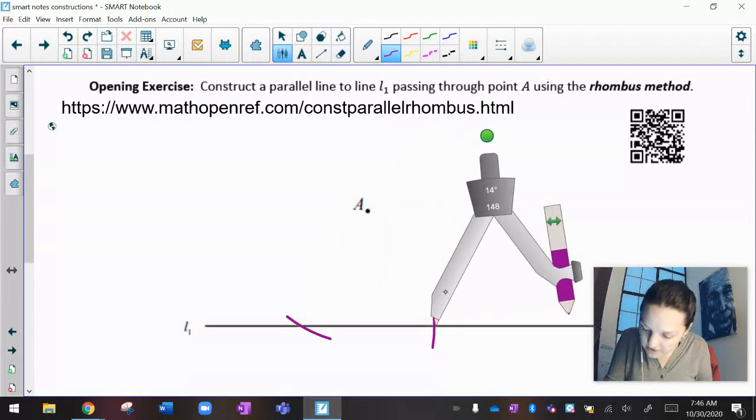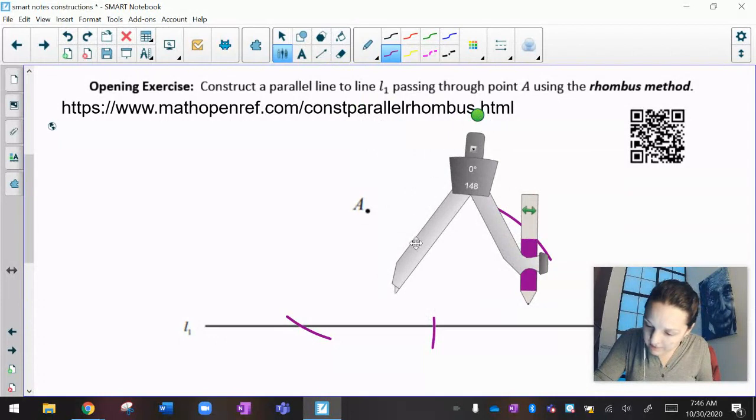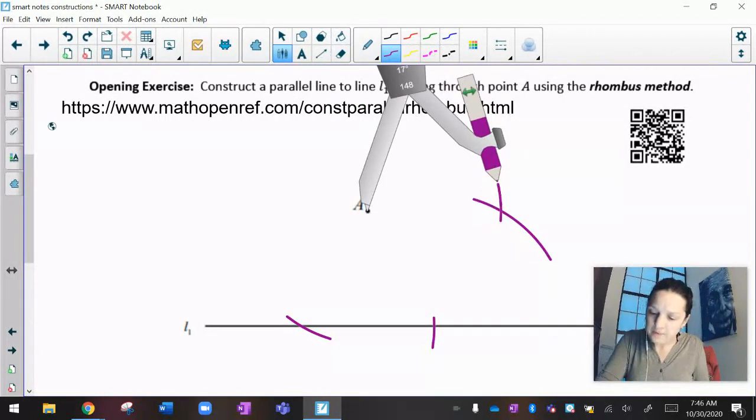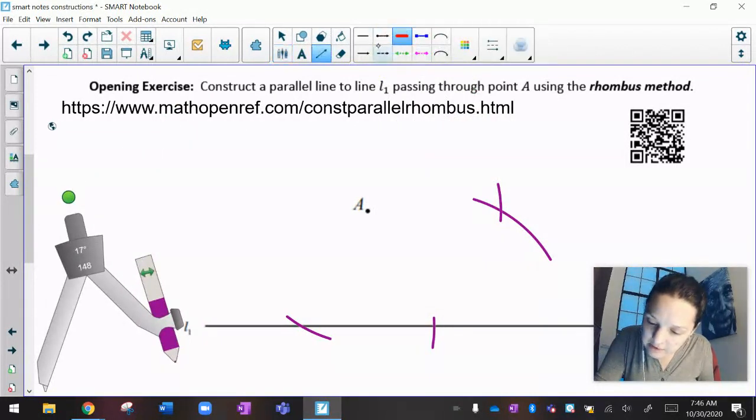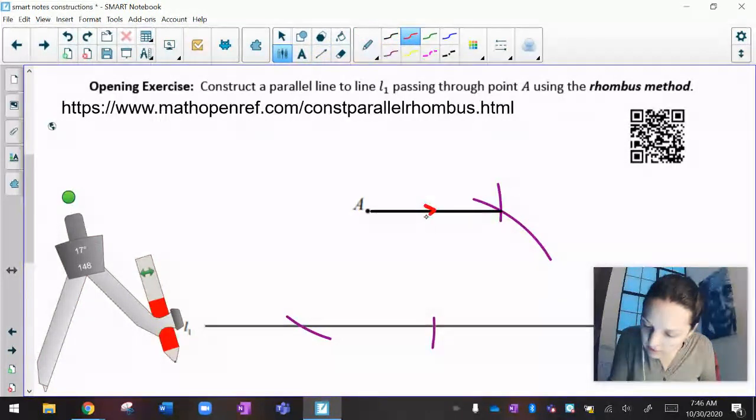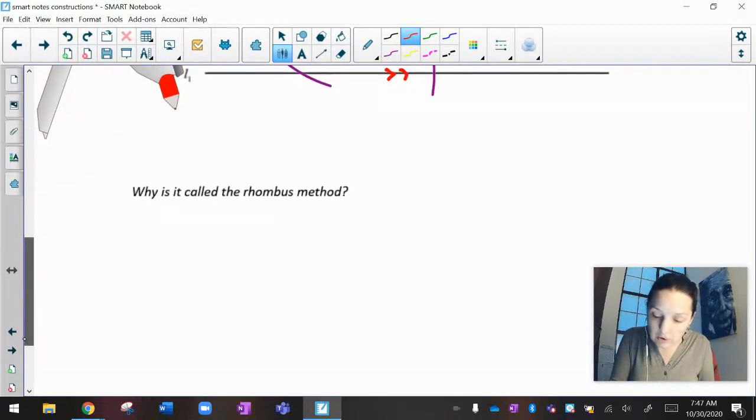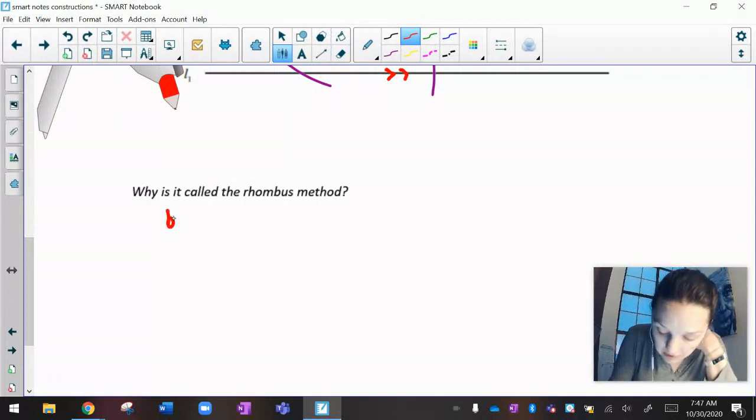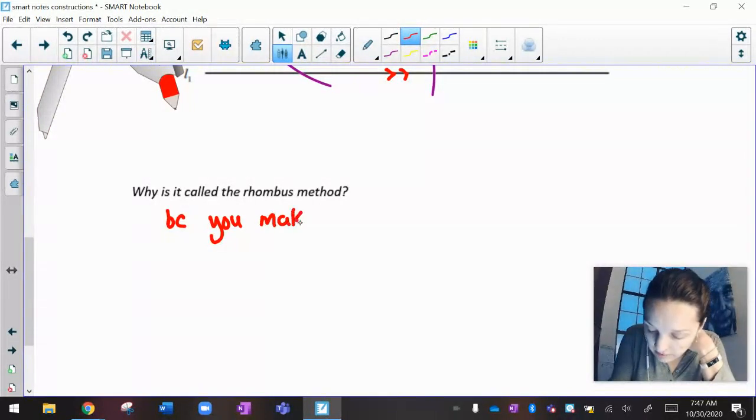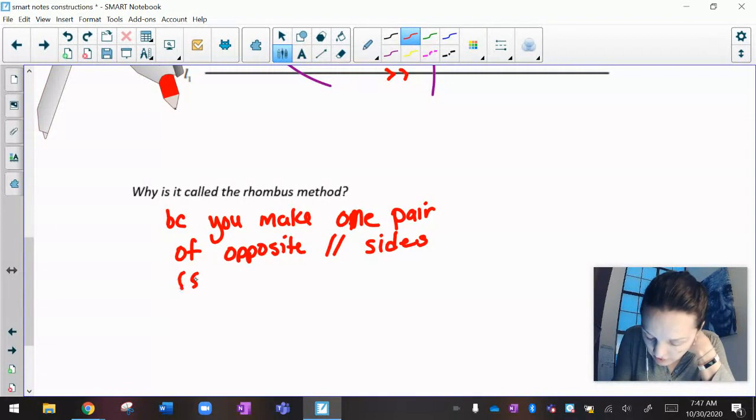Then I'm going to move my compass to that intersection and I'm going to draw an arc up in the air. Then I'm going to move my compass back to A and draw an arc that hits this intersection. And now if I connect A to this last point, this line segment right here is parallel to that thing. That is constructing a parallel line using the rhombus method.